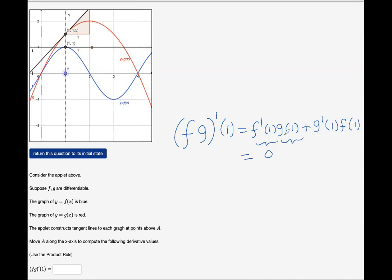We need to compute now g evaluated at 1. G evaluated at 1 is the following: You look at this guy, 1. g is showing an output value for x equals 1 of y equals 1.5. So 1.5 here.